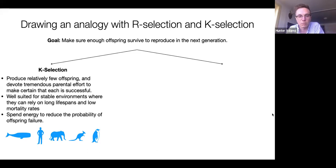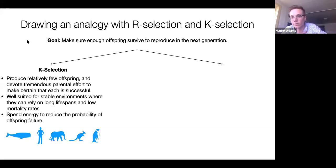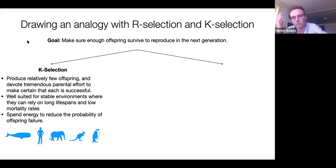One solution is K-selection — the strategy we employ as human beings, also used by whales, penguins, and primates. The solution is to produce very few offspring in your lifetime and devote tremendous energy to each one in order to maximize their probability of success. We all live with our parents for around 18 years. A tremendous amount of energy is devoted to human children to improve their likelihood of success, and this has been unbelievably successful, as evidenced by our existence.